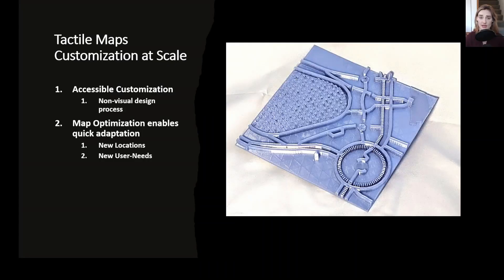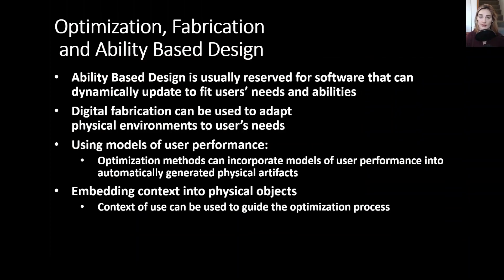More generally, Maptimizer supports tactile map customization at scale. It gives us an accessible means of customizing tactile maps through a non-visual design process that takes in information about the user's preferences, needs, and abilities rather than a visual design of the map. Optimization of the map allows us to quickly adapt the map to new locations or new sets of users' needs, so a user can change their different preferences in different locations or adapt it to a new space, which may have different effects on attention cost and communicativity.